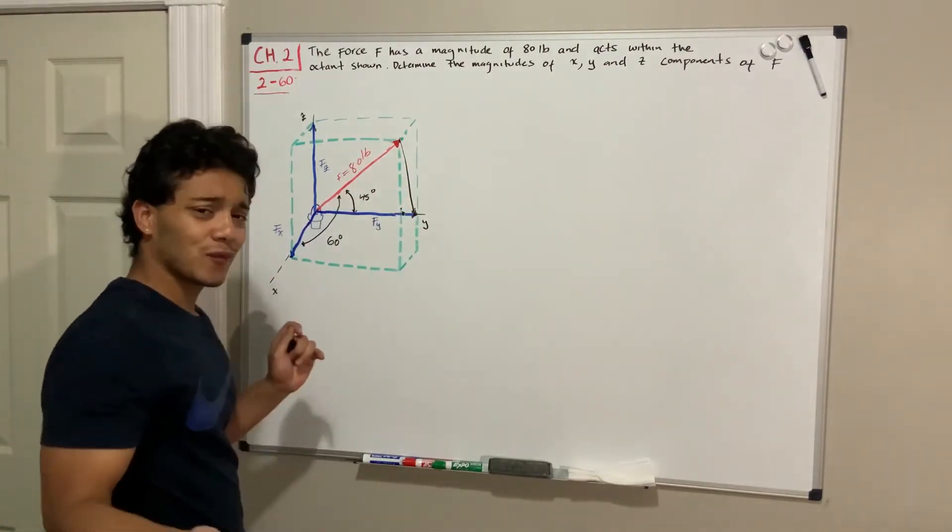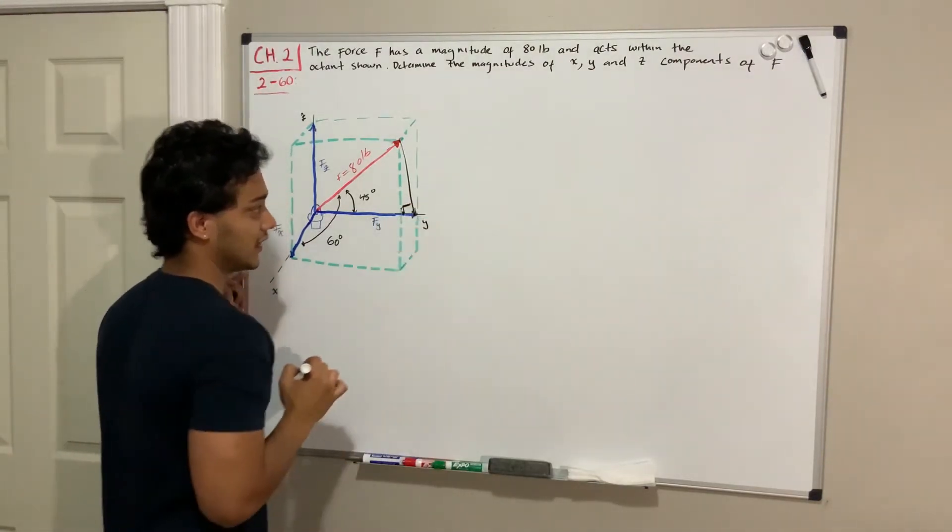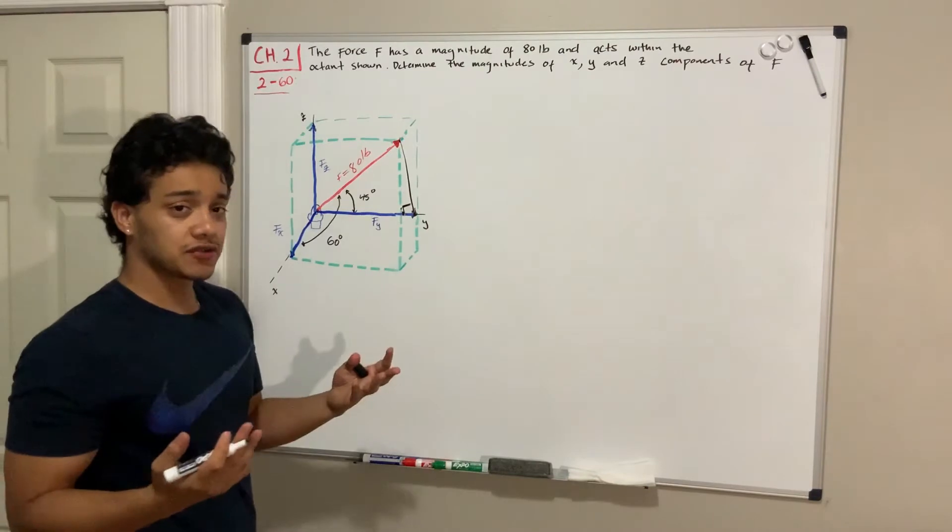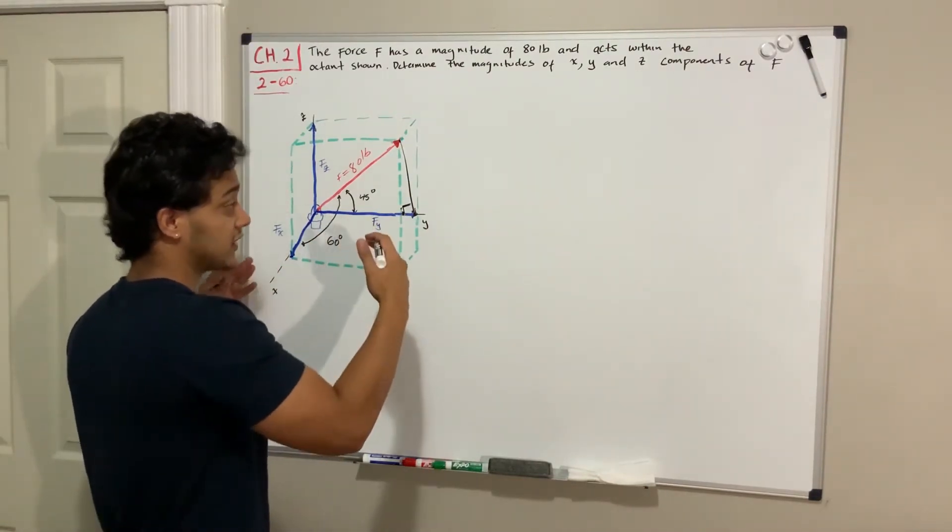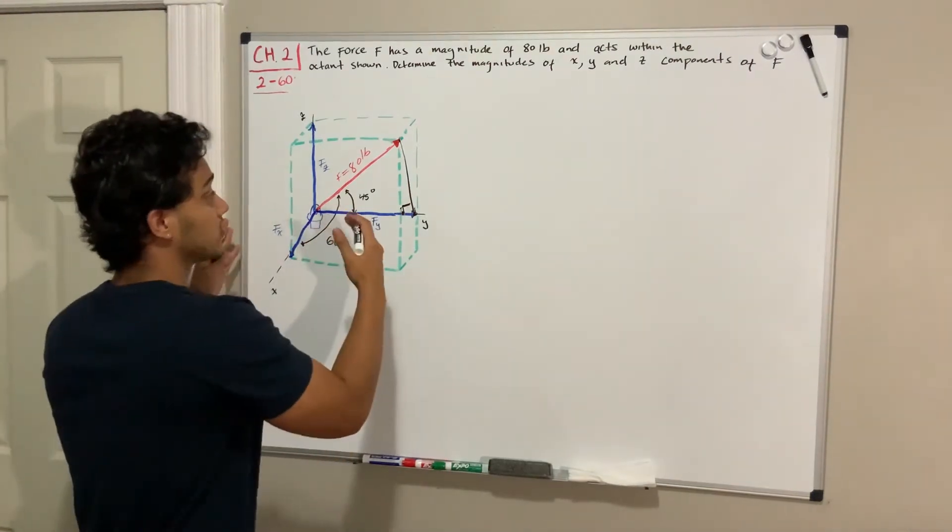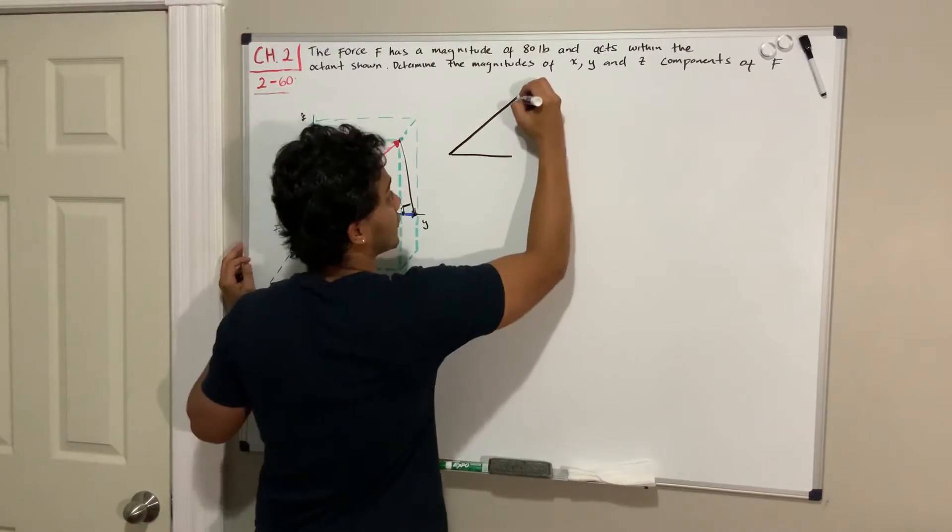But what do I mean by right triangle? This doesn't look like 90 degrees, does it? Well, since it's 3D, the display is not like actually how it looks. So if we were to redraw this triangle, it will look something like this.